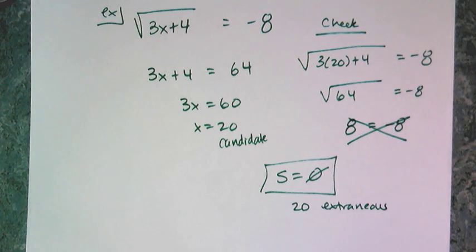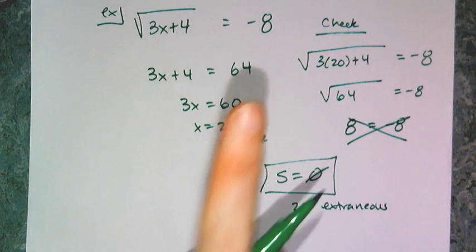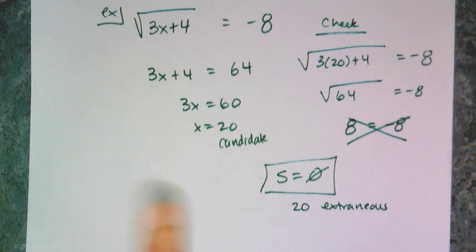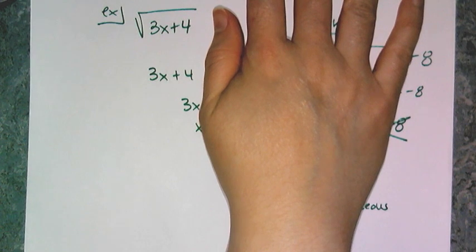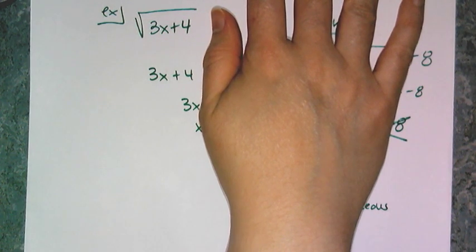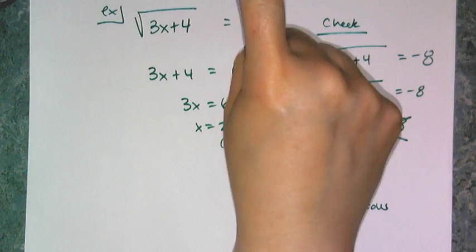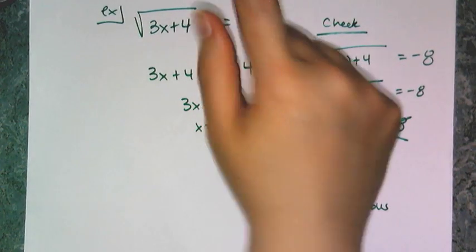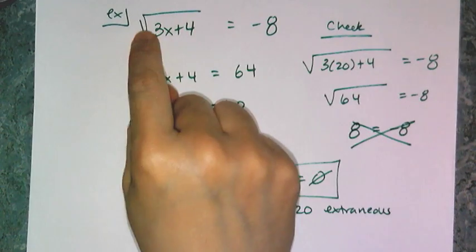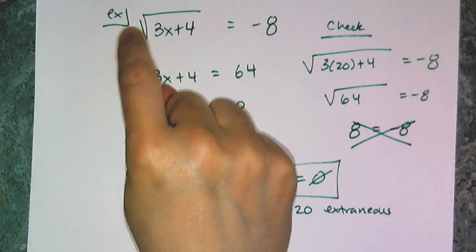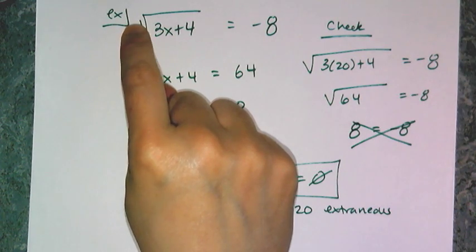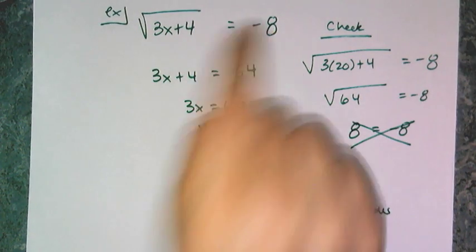I could have figured that out from the very beginning if I remembered the notation with radicals. If I just see a radical, it's telling me I want the principal root, which is the positive one — and it was set equal to some negative number, which is not true. In order for this equation to work and for 20 to be a solution, I would need a negative sign out in front of that square root of 3x plus 4, or the 8 would need to be positive.